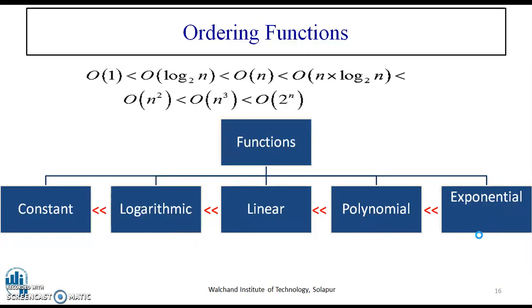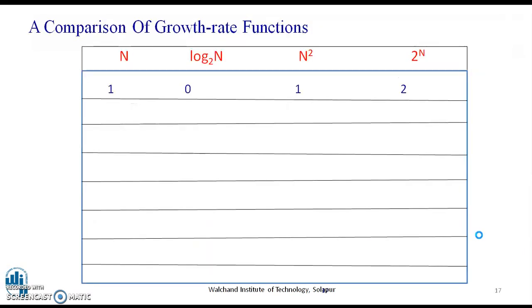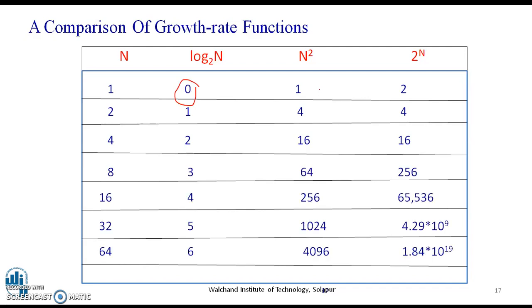Now, we have ordered the functions over here, like O(1) is less than O(log n), then O(n) and so on. Now, a comparison of growth rate functions, if you consider here n as 1, log n will be 0, n² will be 1 and 2^n is equal to 2. When you take n=2, log n will change to 1, n² to 4 and 2 raised to n to 4 and so on. If you see, this goes on increasing. At some time, you see over here that it has become equal, but it keeps on increasing.